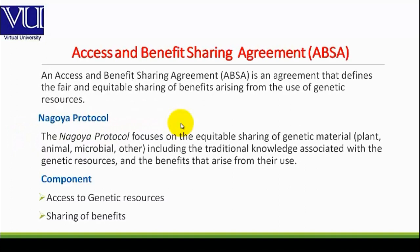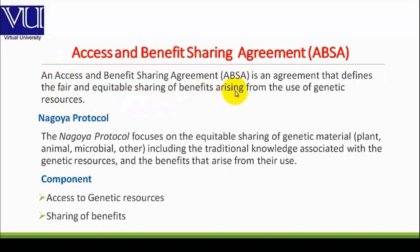Access and Benefit Sharing Agreement is an agreement that defines the fair and equitable sharing of benefits arising from the use of Genetic Resources.